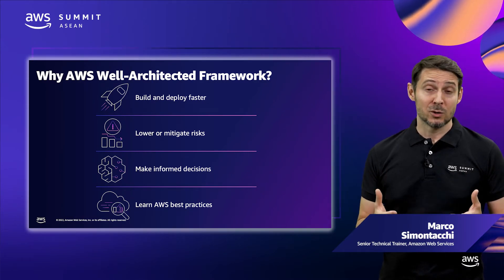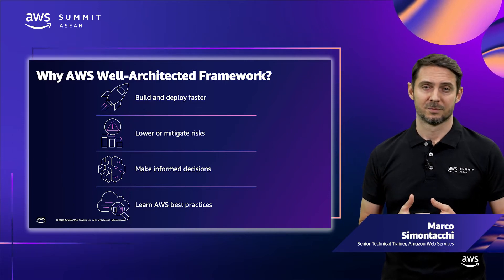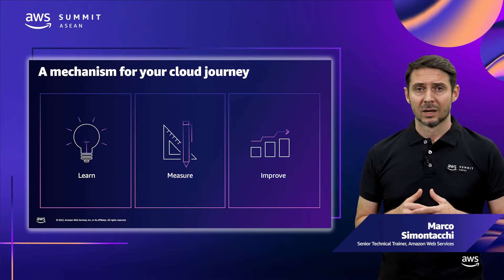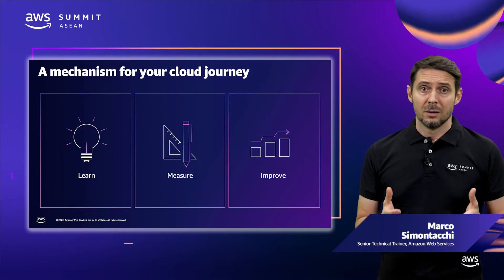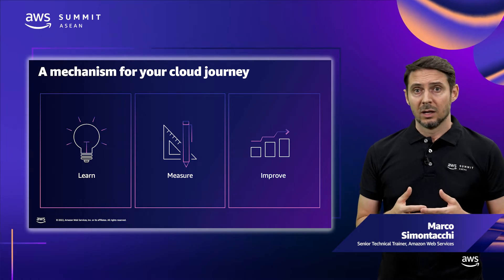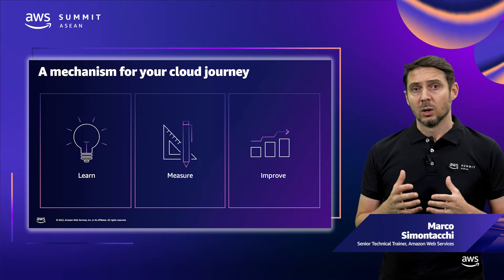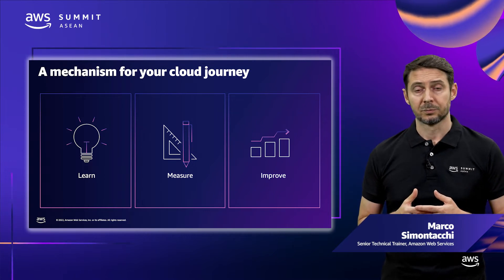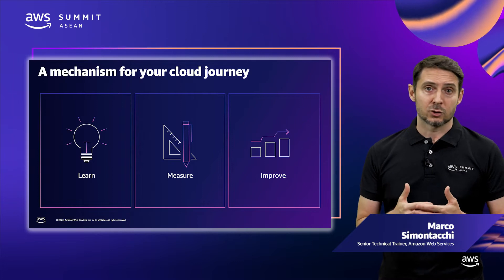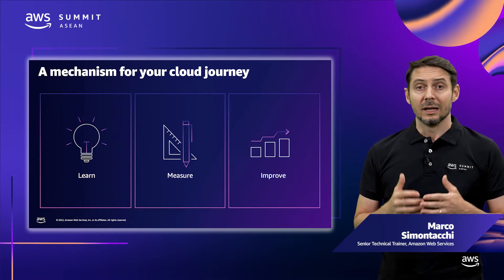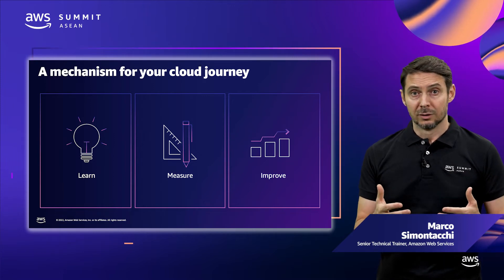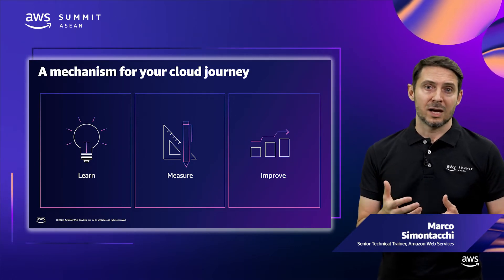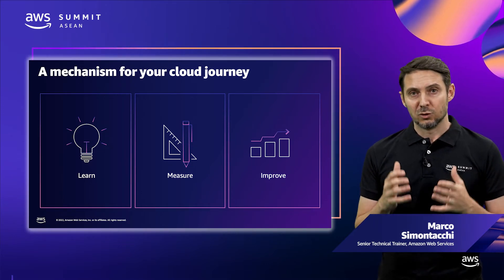We have seen customers use the AWS Well-Architected Framework to successfully achieve all of these. Well-Architected is a mechanism that helps you be successful in your cloud journey. Learn the strategies and best practices for architecting in the cloud. Measure your architecture against best practices — when we have learned best practices and we have a system designed and deployed, we want to measure our architecture and look to see if there are opportunities for further improvement. Ongoing improvement is the goal. Improve your architecture by addressing any issues, implementing changes to address the issues you have uncovered, as the workload evolves to provide optimal capability and better business outcomes.